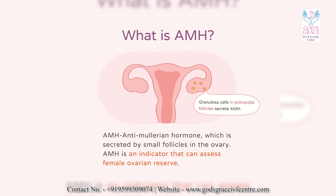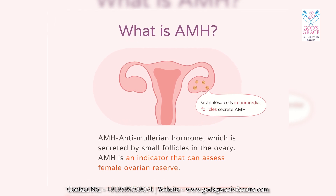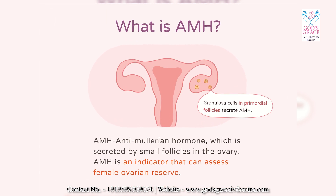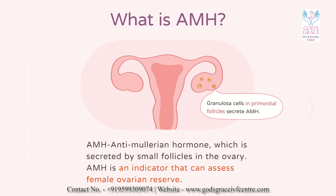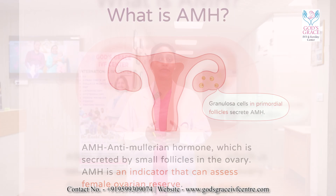AMH, or anti-mullerian hormone, is basically secreted from very small follicles in the ovary. These follicles contain immature eggs. AMH helps us know how much ovarian reserve a particular lady has — it tells us about the quantity or the number of eggs. It does not tell us about the quality.